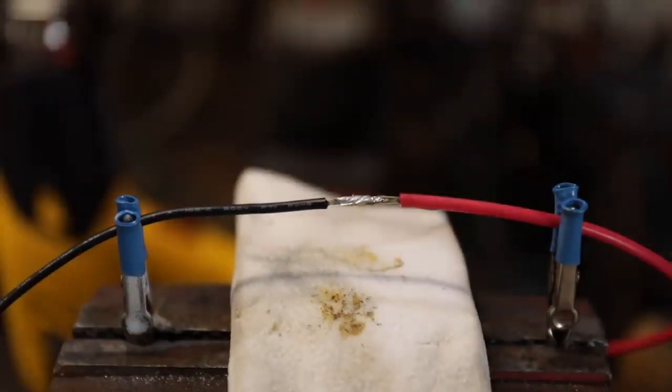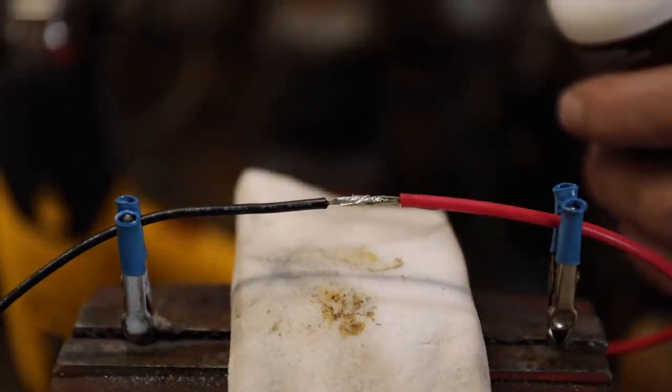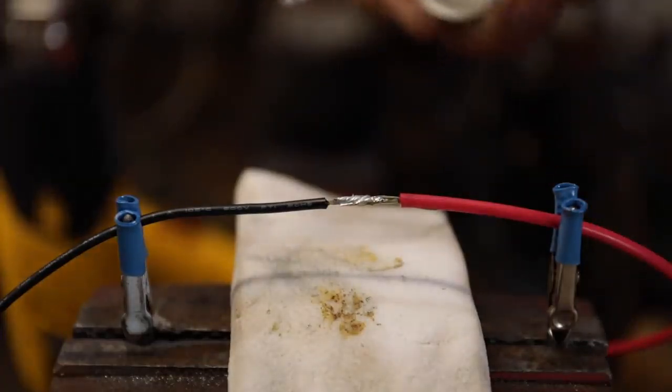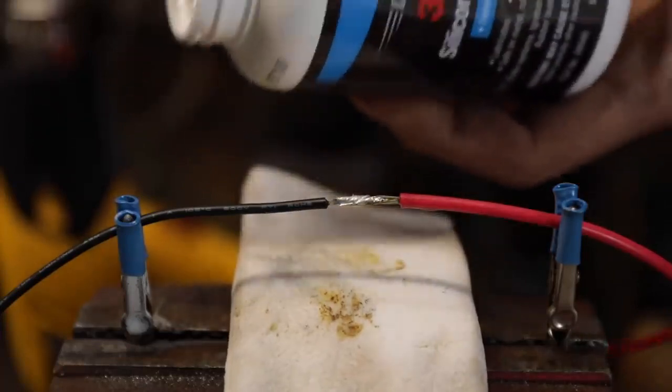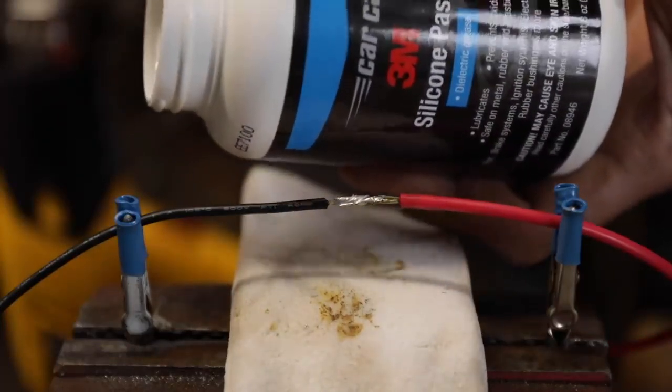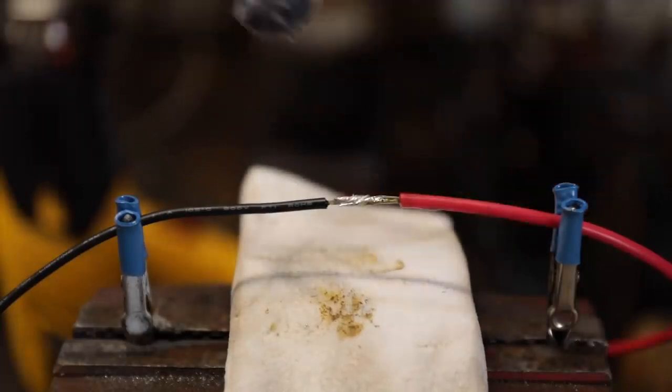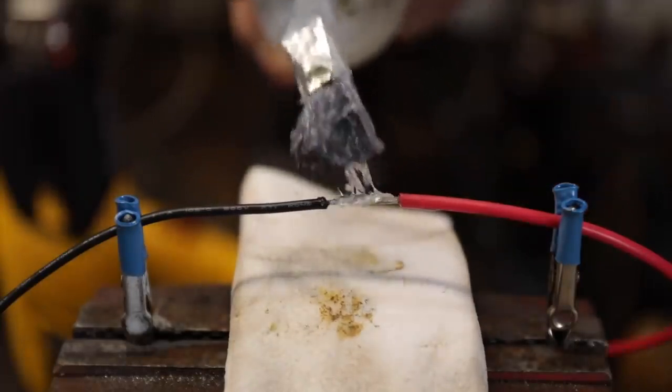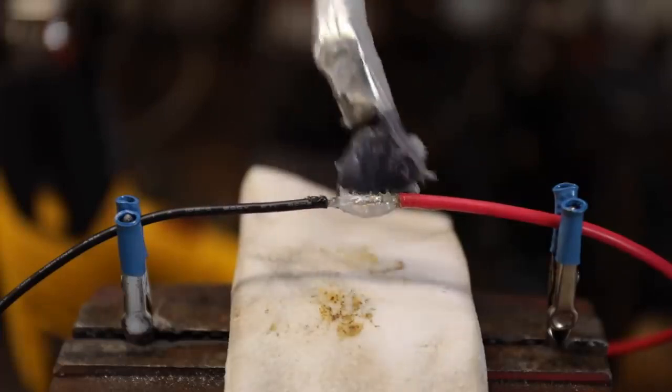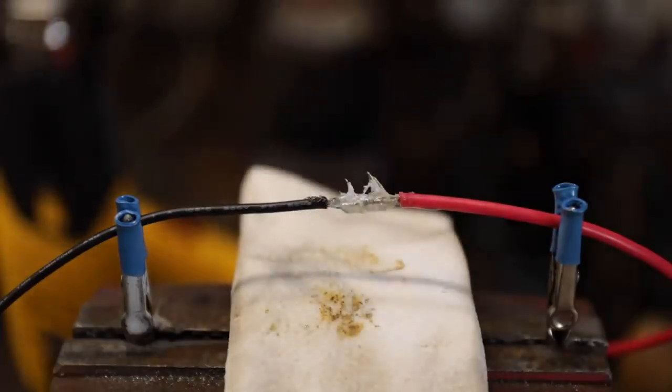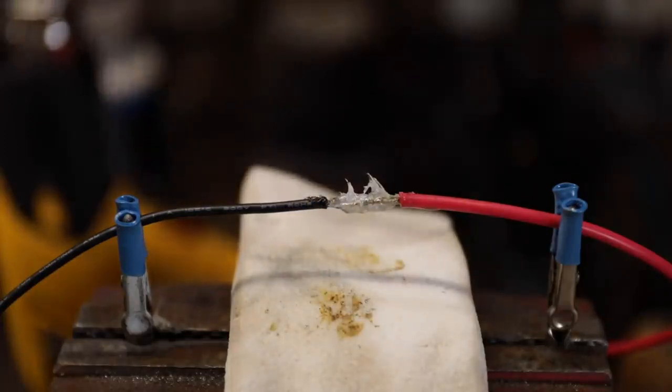Now we want to waterproof this. This is where we're going to use the 3M silicone paste. Having this in your shop anytime you put together electrical connectors or anything like that is so good. We'll just put a little bit of that on there like that, and now we're going to do our shrink tubing.